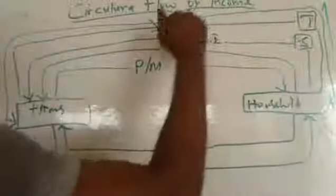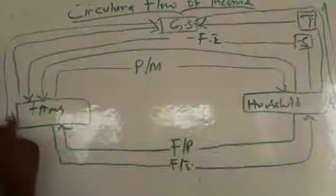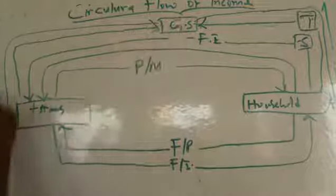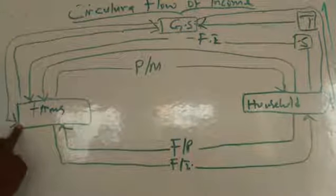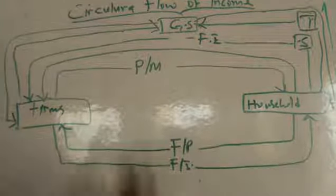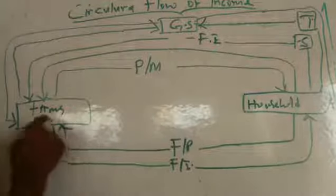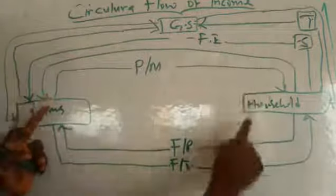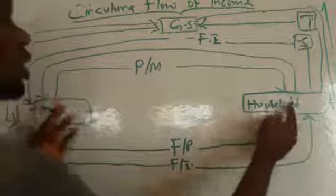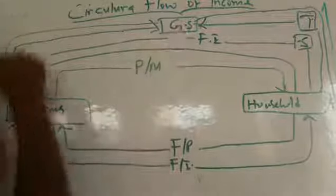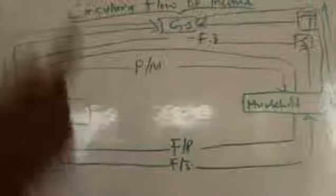As the government receives money as leakages from the household and from firms, it must also pay the household back as transfer payments and palliatives, and pay the firms back by purchasing goods and services from them and by providing infrastructure for easy transport of goods. So, as money comes into the hands of firms, firms send it to government and to household; as household receives money, they send it to firms and to government; and as government receives money, it sends it back to firms and to household. That is how the circular flow evolves in the three sector model.